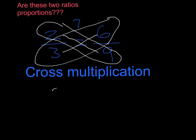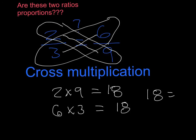So here, we're going to multiply two times nine, which gives us 18, and we're going to multiply six times three, or three times six, which will give us 18.